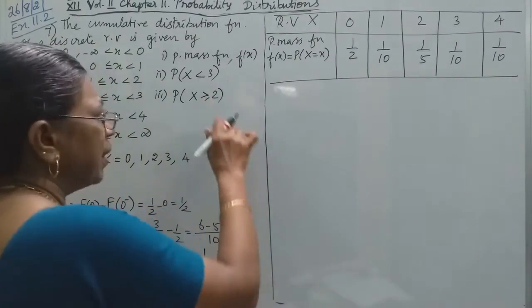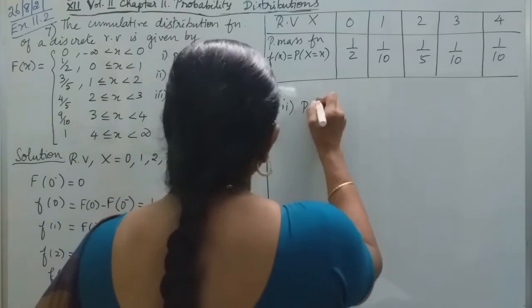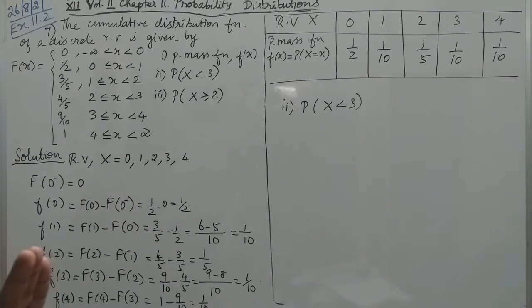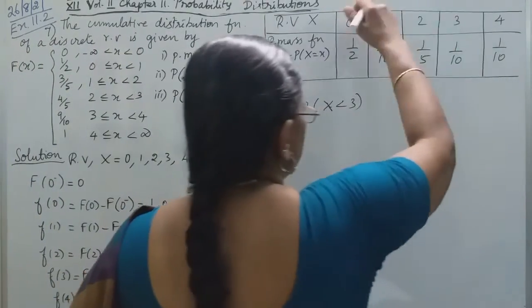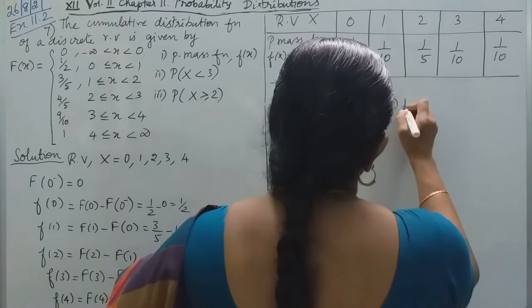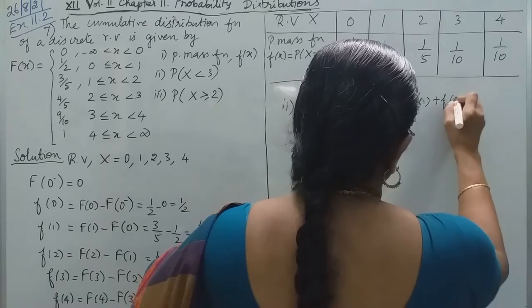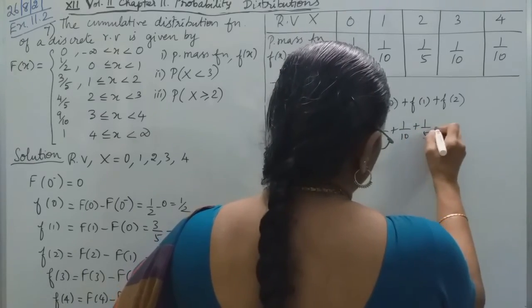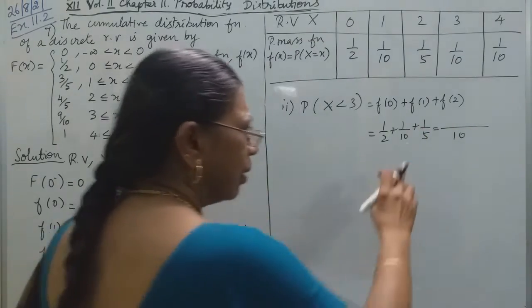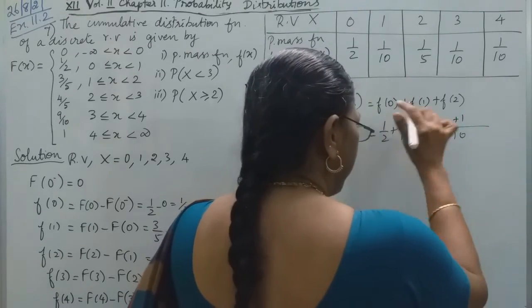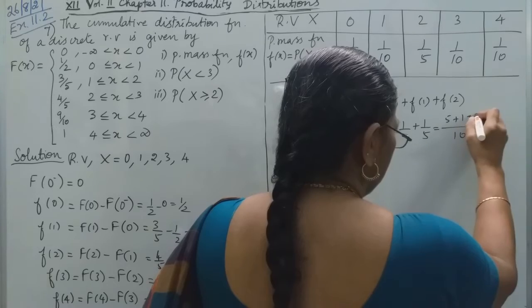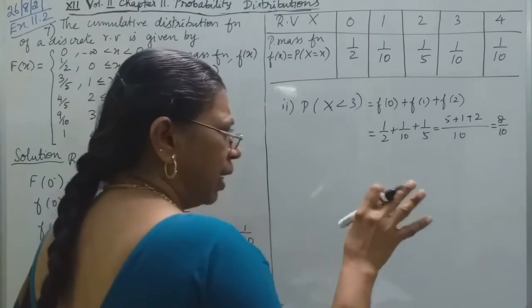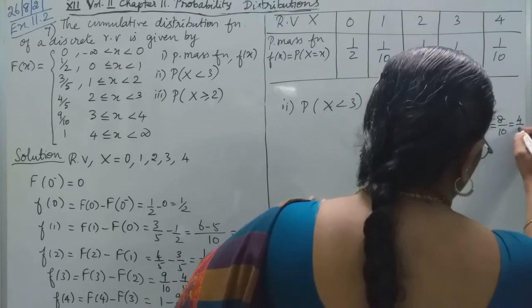Now the second part, that is probability that capital X is less than 3. So X will take values 0, 1, 2. That is f(0) plus f(1) plus f(2). So the sum is 1/2 plus 1/10 plus 1/5. The LCM is 10, so 5 plus 1 plus 2, total is 8/10, which equals 4/5.